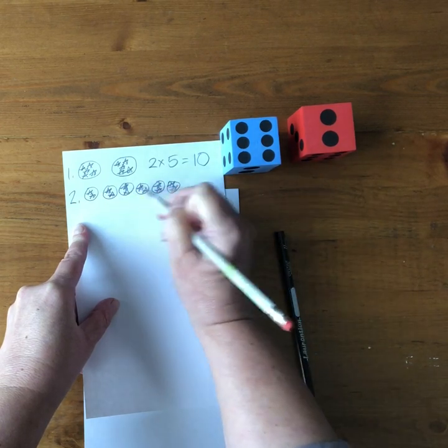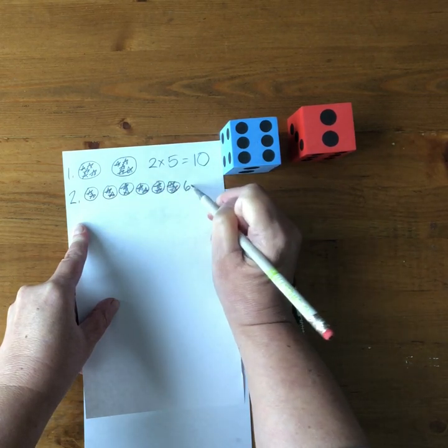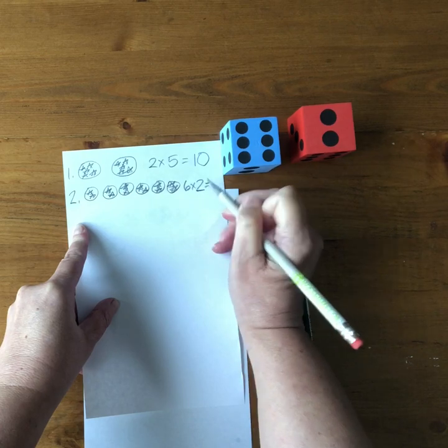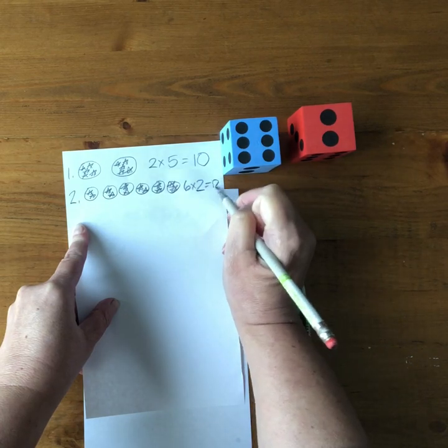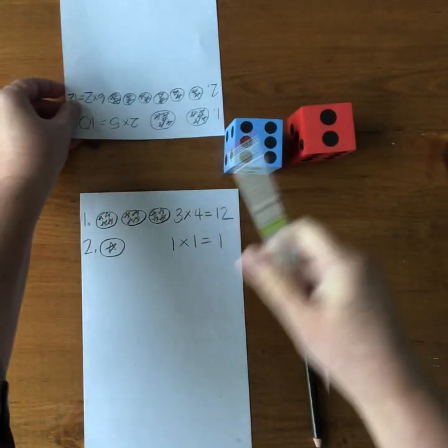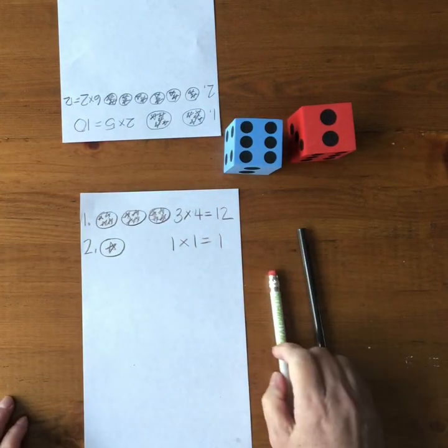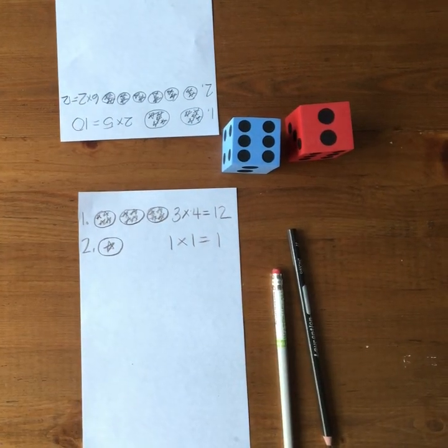Two four six eight ten twelve six times two equals twelve and we keep going back and forth until we have ten rounds.